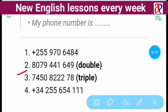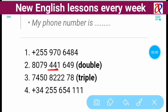The second example: eight zero seven nine four four one six four nine. When a phone number contains two consecutive numbers of the same digit — for instance, four four — those two consecutive numbers can be read as 'double four.' So 'double' is used when the same digit appears twice in a row.